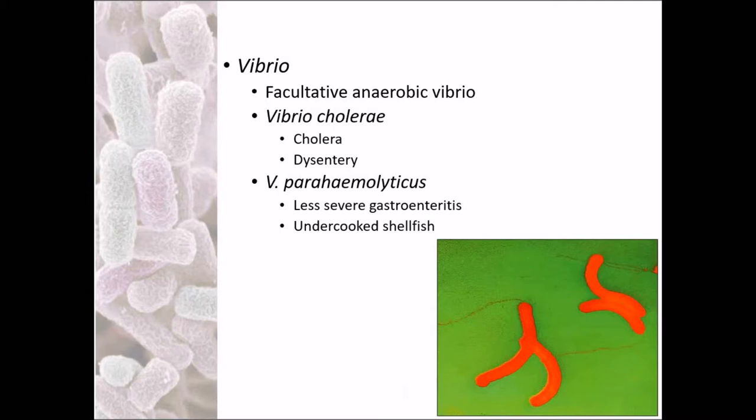Vibrio is a facultative anaerobic, comma-shaped bacterium. Vibrio cholerae causes cholera, a kind of dysentery. Vibrio cholerae also causes less severe gastroenteritis caused due to undercooked shellfish. Vibrio is a known aquatic microbe.